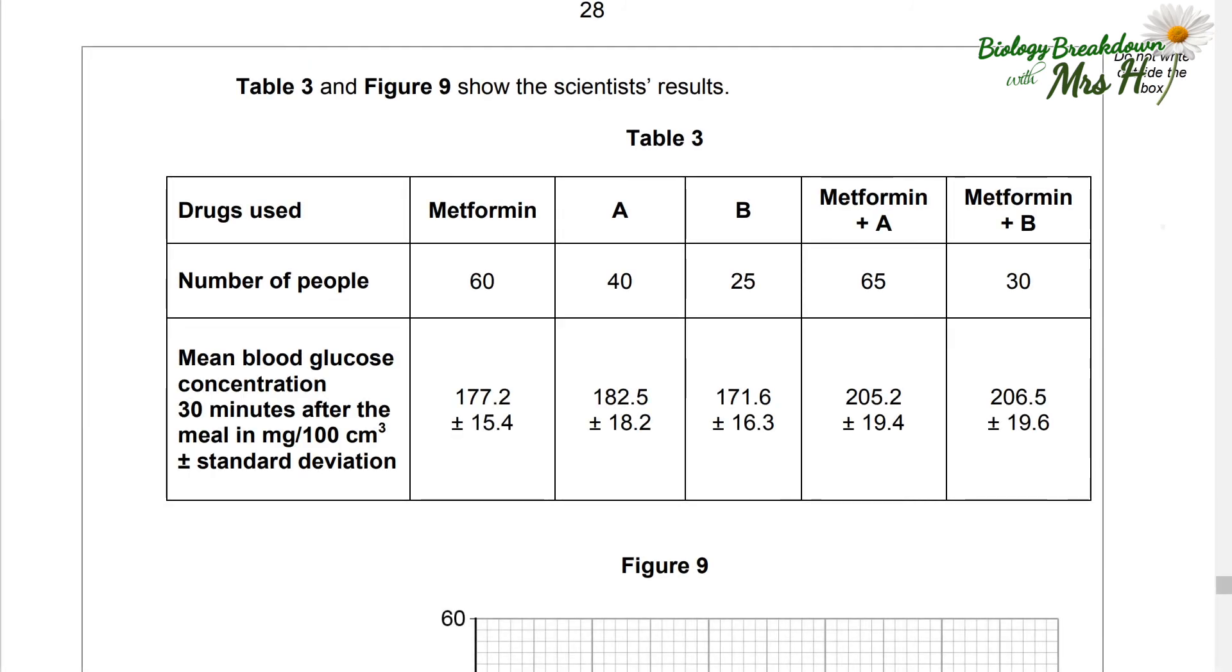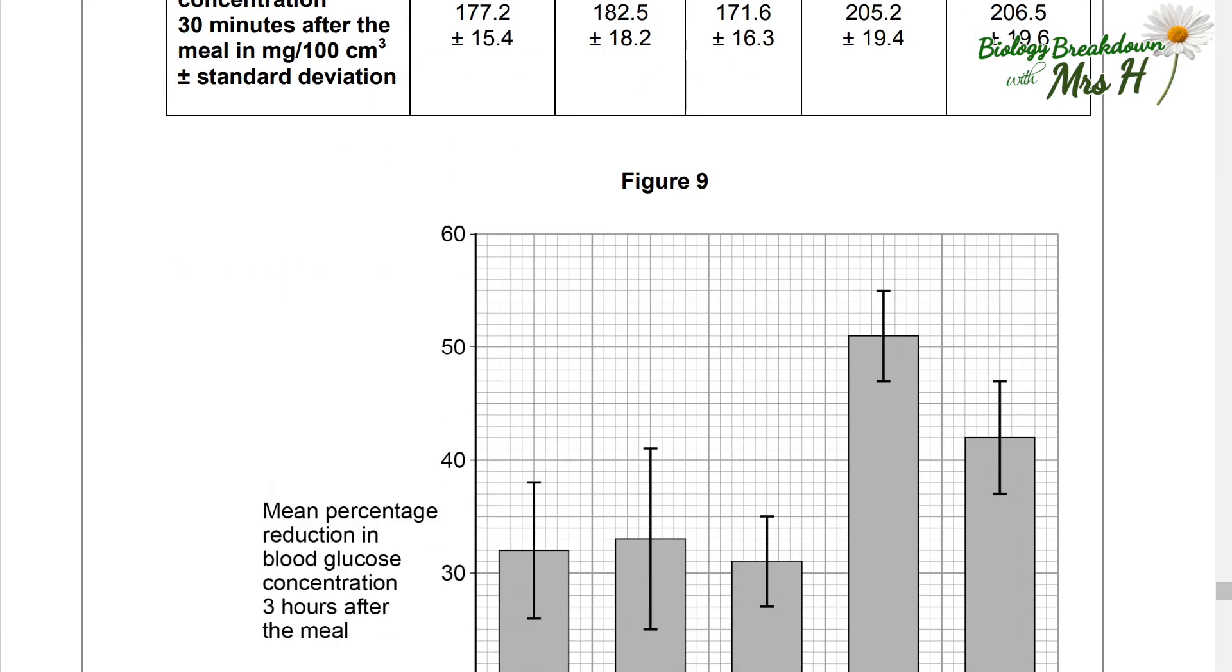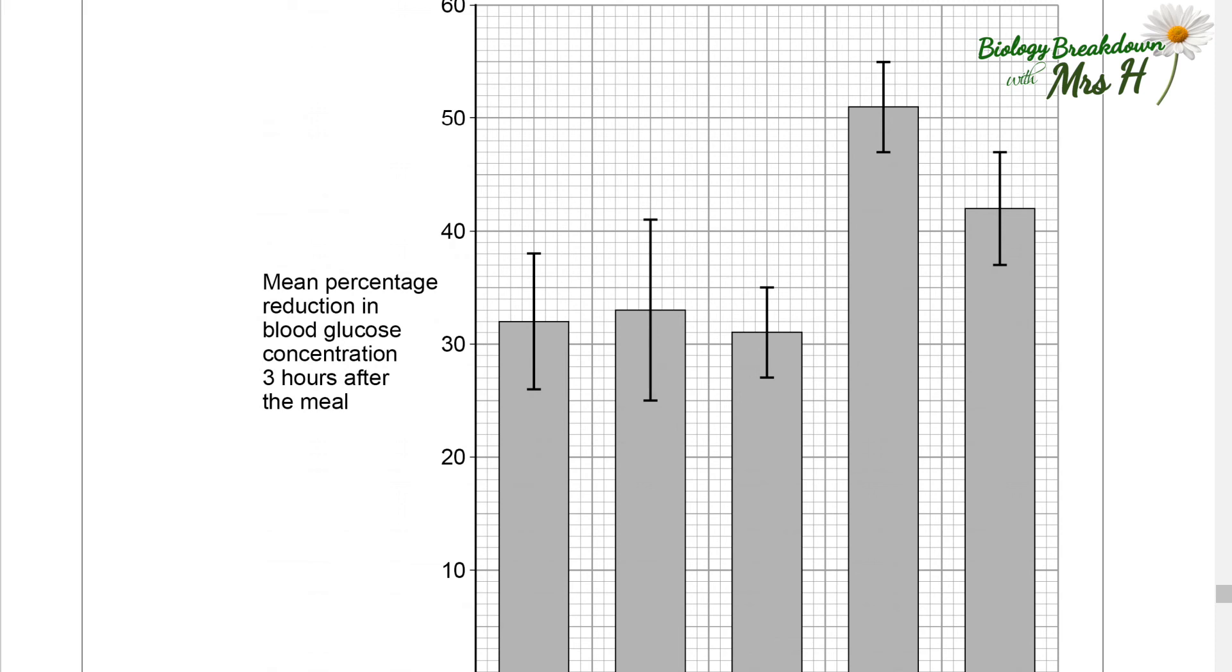Table three and figure nine show the scientists' results. So we've got a table, a number of people. These are different drugs. So metformin A, B, metformin plus A, metformin plus B. And you've got 60 people with just metformin, 40 with just A, 25 B, 65 and 30. How strange is that? So we could probably comment on that later, no doubt. And then we've got this graph. Now those bars are showing the standard deviation. So if we look at metformin, the mean percentage of reduction in blood glucose concentration three hours after the meal, 32% is the mean, but the variation around the mean means that some people's reduction was 38%, while some people in the group will have had a reduction of 26%. Now the bigger the bar, the bigger the standard deviation. So the bigger the bar, the less precise those results are.